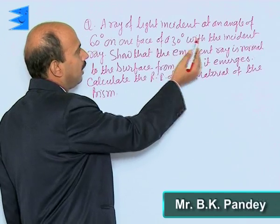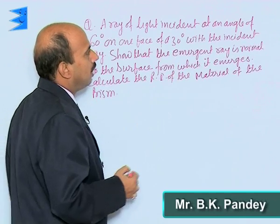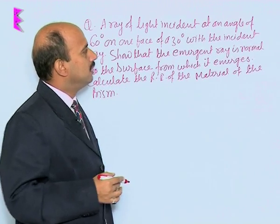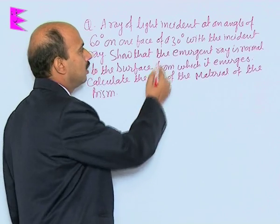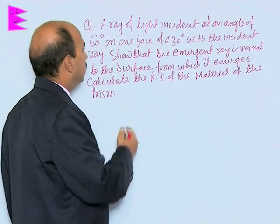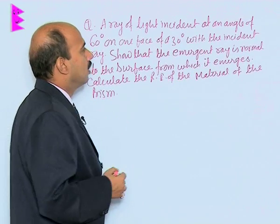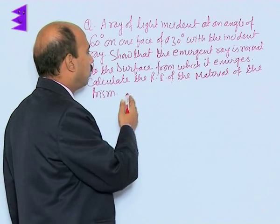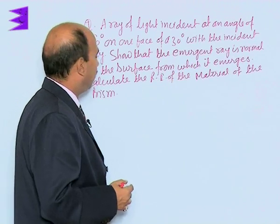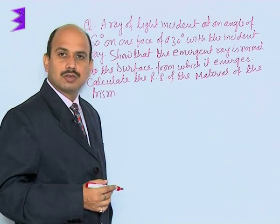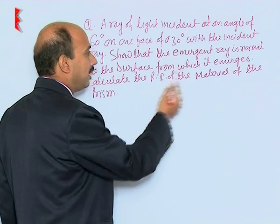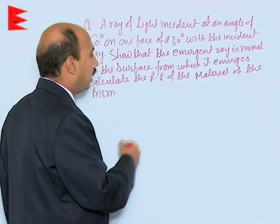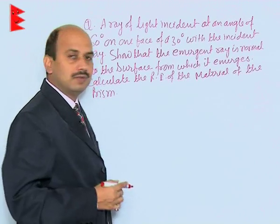In this question, a ray of light is incident at an angle of 60 degrees on one face of a prism, making a deviation of 30 degrees with the incident ray. We have to show that the emergent ray is normal to the surface from which it emerges, and then calculate the refractive index.